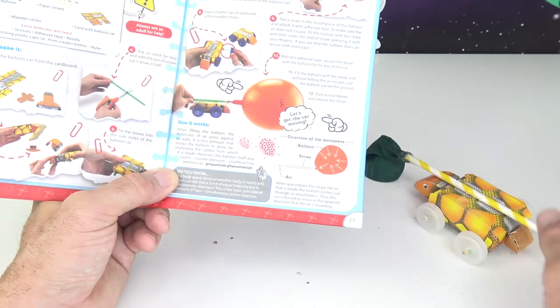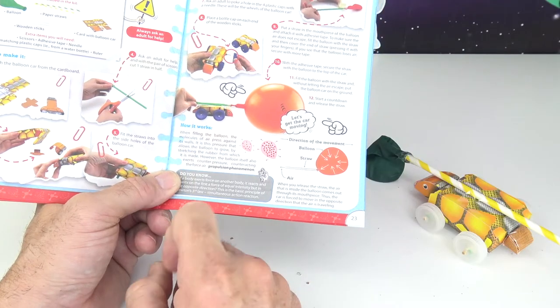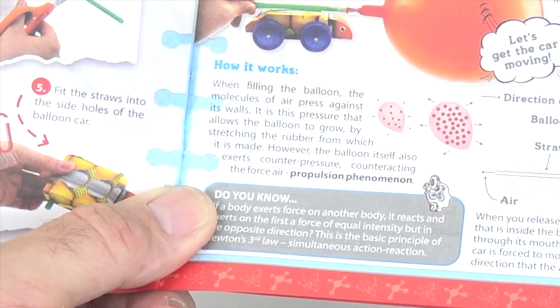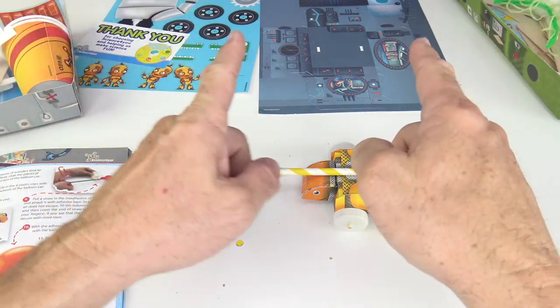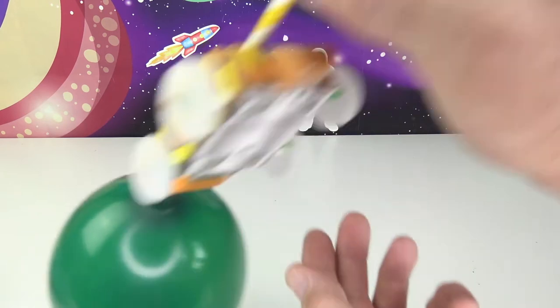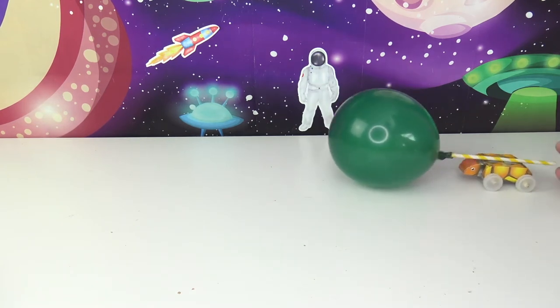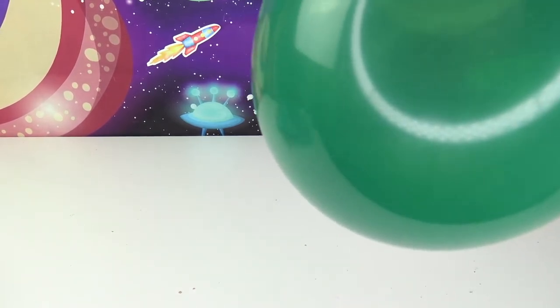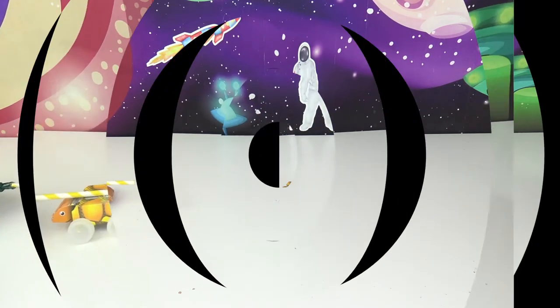Now the best way to put the wheel on is have the wooden peg on the bottom here just to give it a little bit of stability so you can press. There you go. Just like that. And now let's put the other one on. Okay, now our car is ready for its engine which is this right here. Let's attach this balloon and straw which is step number 10. So how this balloon car works, it says right here, when filling the balloon, the molecules of air press against the walls. It is this pressure that allows the balloon to grow by stretching the rubber from which it is made. However, the balloon itself also exerts counter pressure, counteracting the force air propulsion phenomenon. Let's clear the table and get ready to test out our balloon car. Let's now blow it up. Okay kids, now you just want to hold your finger on the edge to release your car. We're going to put it right here and hopefully this thing works. Are you ready? 3, 2, 1, go! It works! It's not very fast. Let's try that again. Alright, I gave it a little bit more air. Are you ready? Let's release.